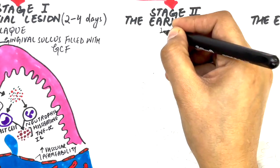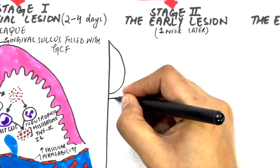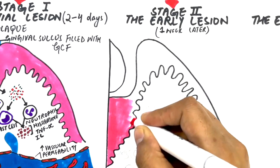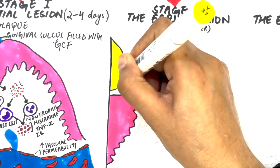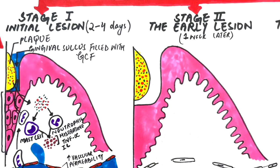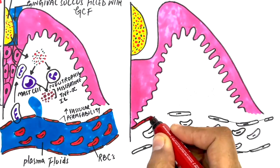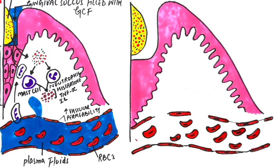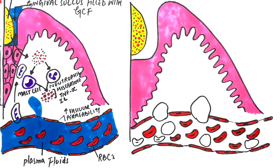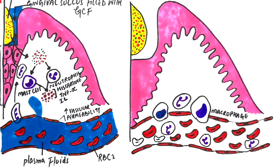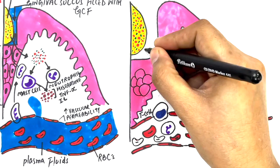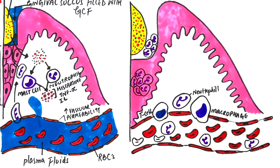The early lesion develops about one week after continual plaque accumulation at the initial stage. This stage is characterized by an exaggeration of all those events that started in the initial stage. The vascular permeability is increased even more, which causes migration of more inflammatory cells to the site of insult. The inflammatory cells in this second stage are the neutrophils, the T lymphocytes, and macrophages, with the predominant cells being the T lymphocytes and neutrophils. A huge number of neutrophils are observed in the connective tissue, within the junctional epithelium, and within the gingival sulcus.